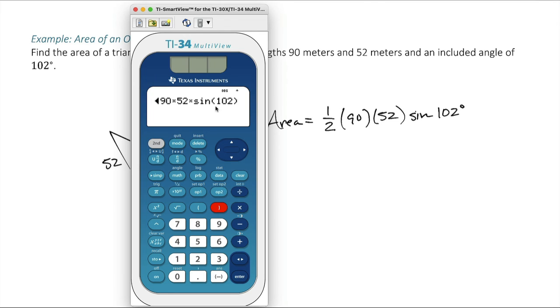I'm in degree mode, so the calculator knows this is 102 degrees. Hit enter, and we get our area.